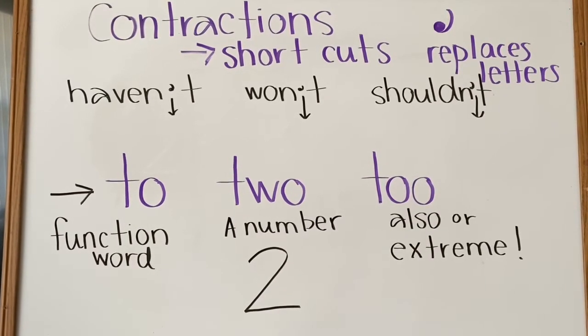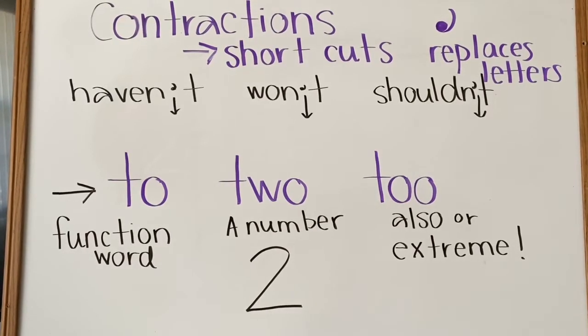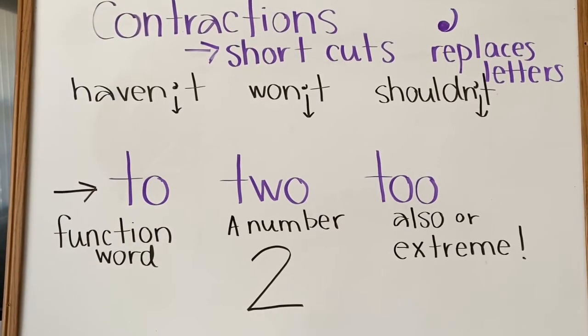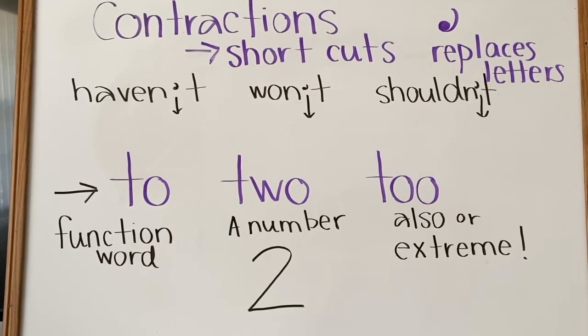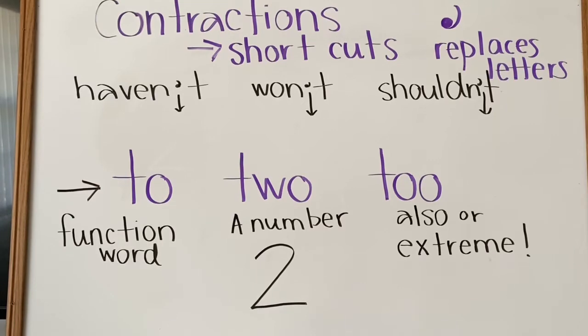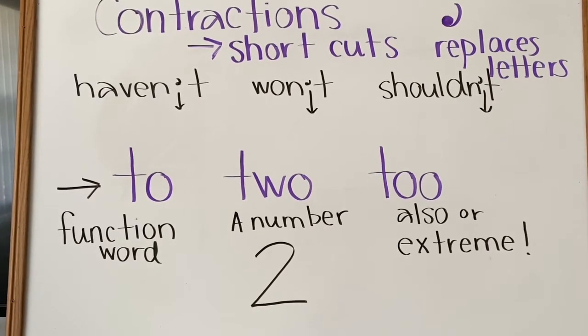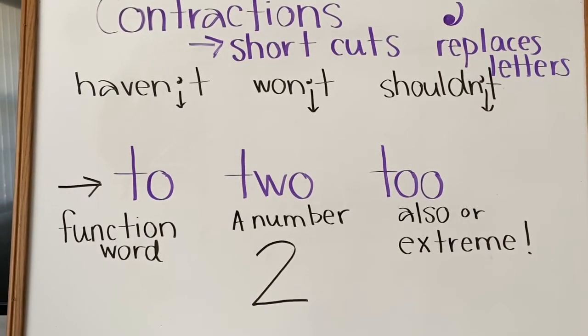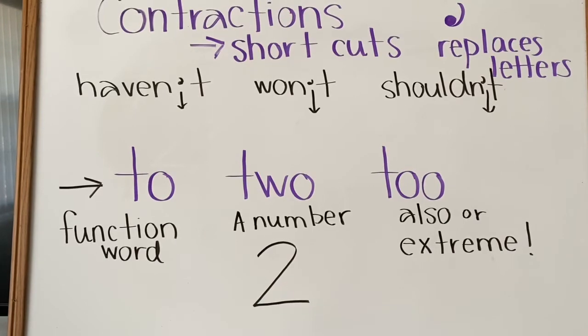Let's look at contractions that have the word not in them. Haven't, won't, and shouldn't. What two words make up the word haven't? That's right, have and not.